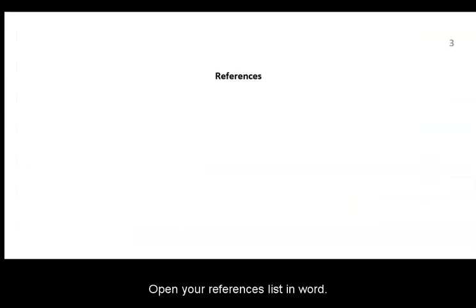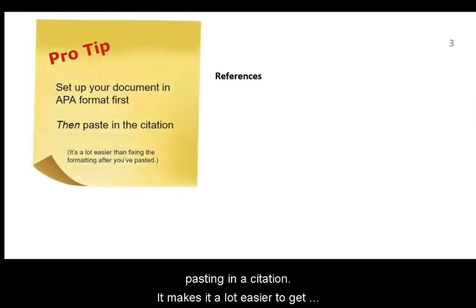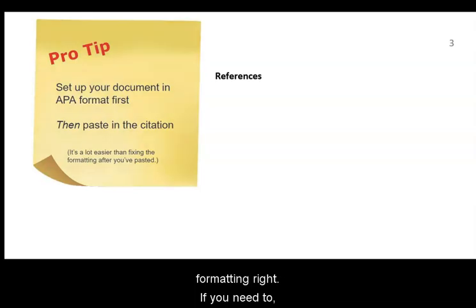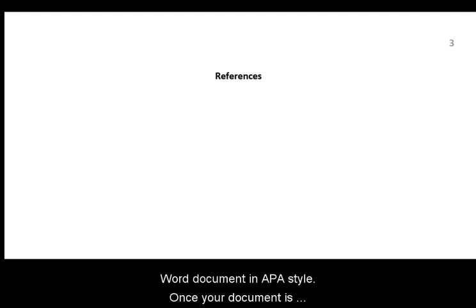Open your references list in Word. It's a good idea to format your document in APA before pasting in a citation — it makes it a lot easier to get formatting right. If you need to, pause this video and watch our video on formatting a Word document in APA style.